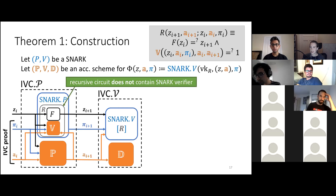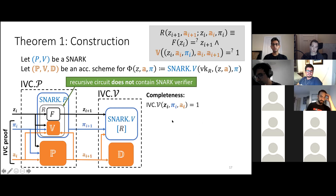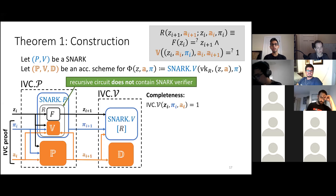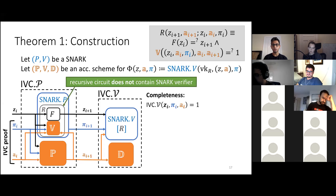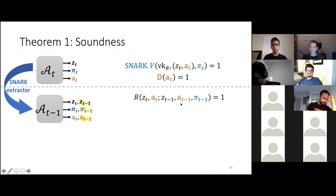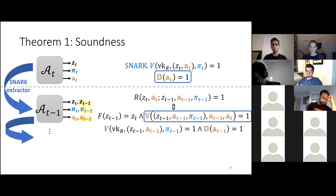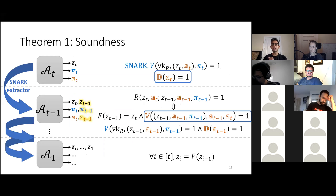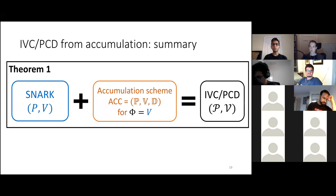There was a question in chat from Srikar asking for a concrete example of an accumulation scheme. Halo uses something like this — they didn't phrase it as such since our paper wasn't out when they released theirs, but viewed correctly, Halo's key idea is constructing an accumulation scheme for one specific SNARK. You can also plug in different underlying components with accumulation schemes to get SNARKs with different properties. Additionally, for soundness in this construction, you only need soundness of the accumulation scheme — not knowledge extraction — which is a cool property.